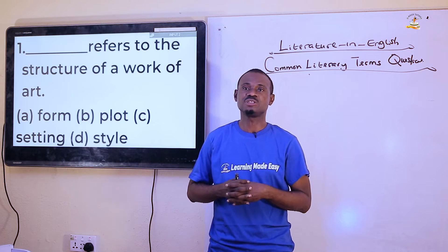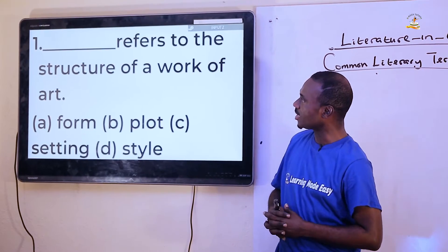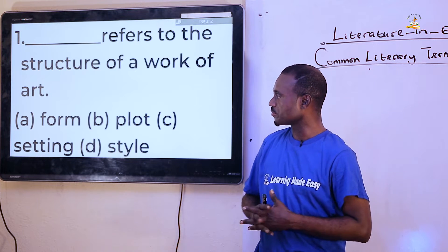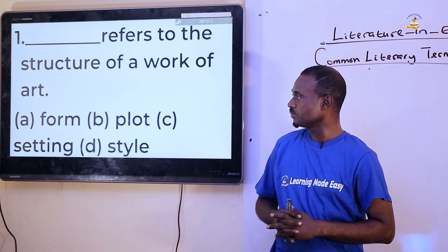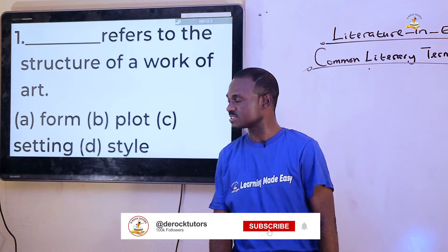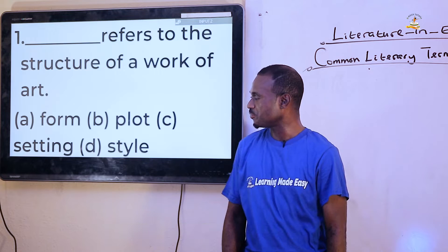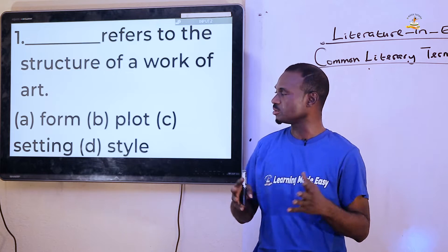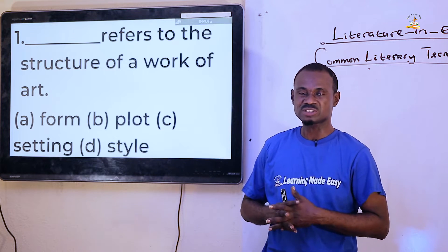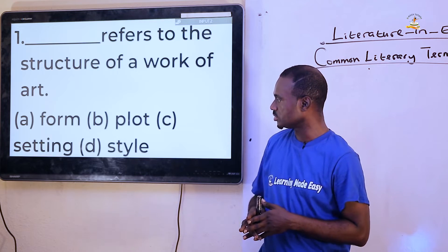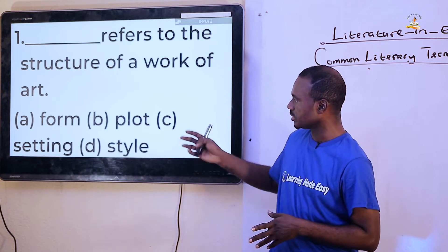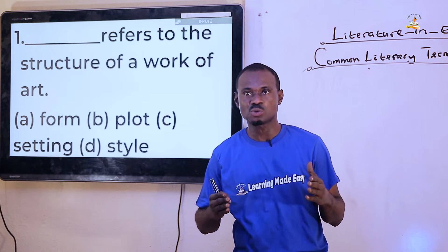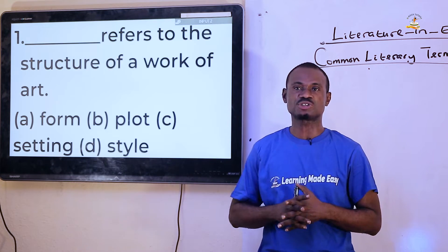Question one: 'dash' refers to the structure of a work of art. Options are: A - form, B - plot, C - setting, D - style. Using the elimination method, structure is not style, not setting, not form. Therefore the correct answer is option B, which is plot.